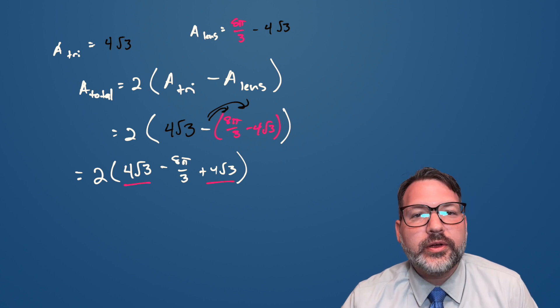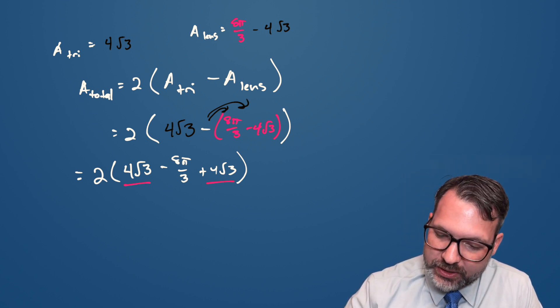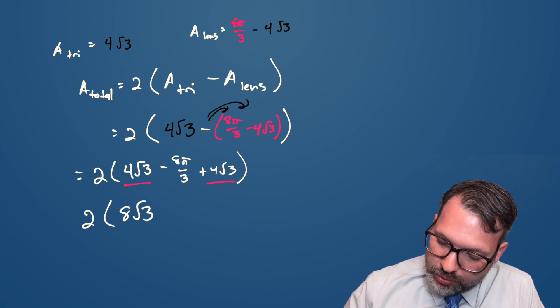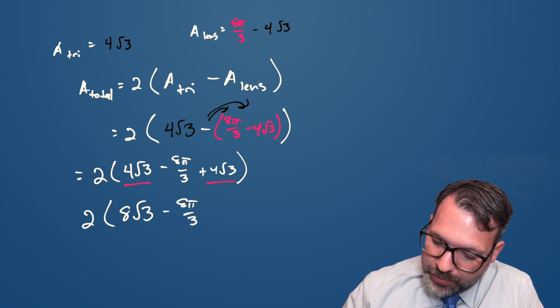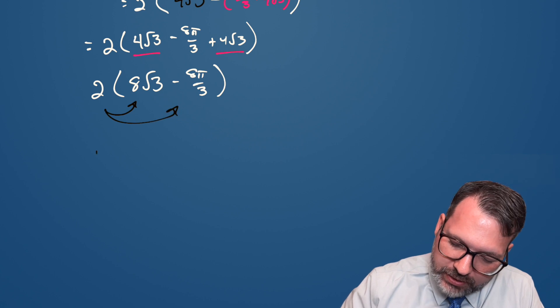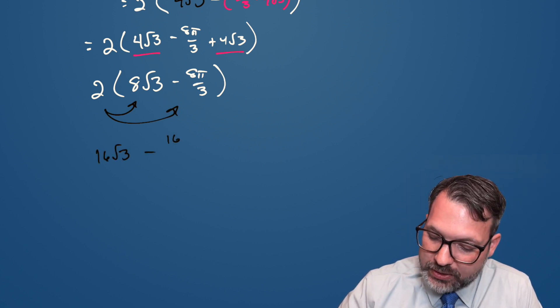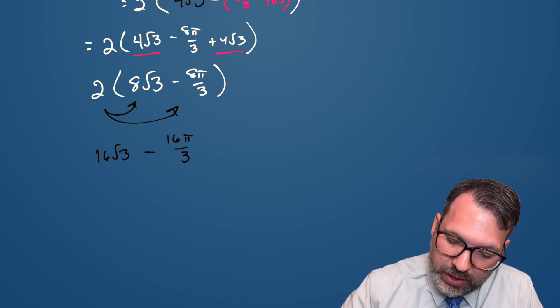We've got some radicals that go together here, 4√3 plus 4√3 is 8√3, and so finally we want 2 times 8√3 minus 8π over 3. 2 times 8√3 is 16√3, and 2 times negative 8π over 3 is negative 16π over 3, and so there you have it.